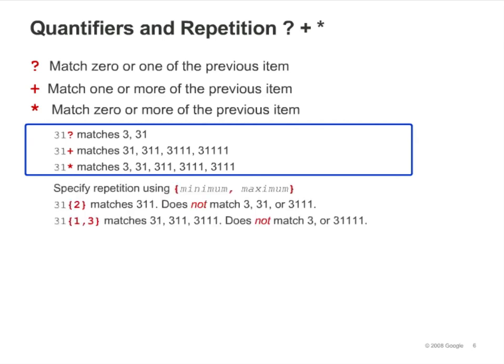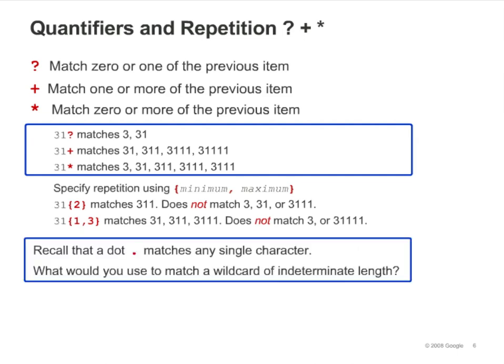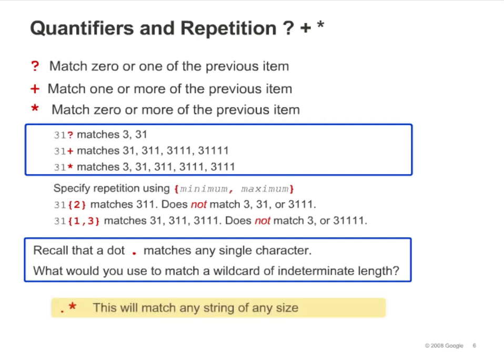You can also specify repetition using a minimum and maximum number inside curly brackets. Recall that a dot matches any single character — what would you use to match a wildcard of indeterminate length? Dot-star will match a string of any size. Dot-star is an easy way to say "match anything," and is commonly used in Google Analytics goals and filters.